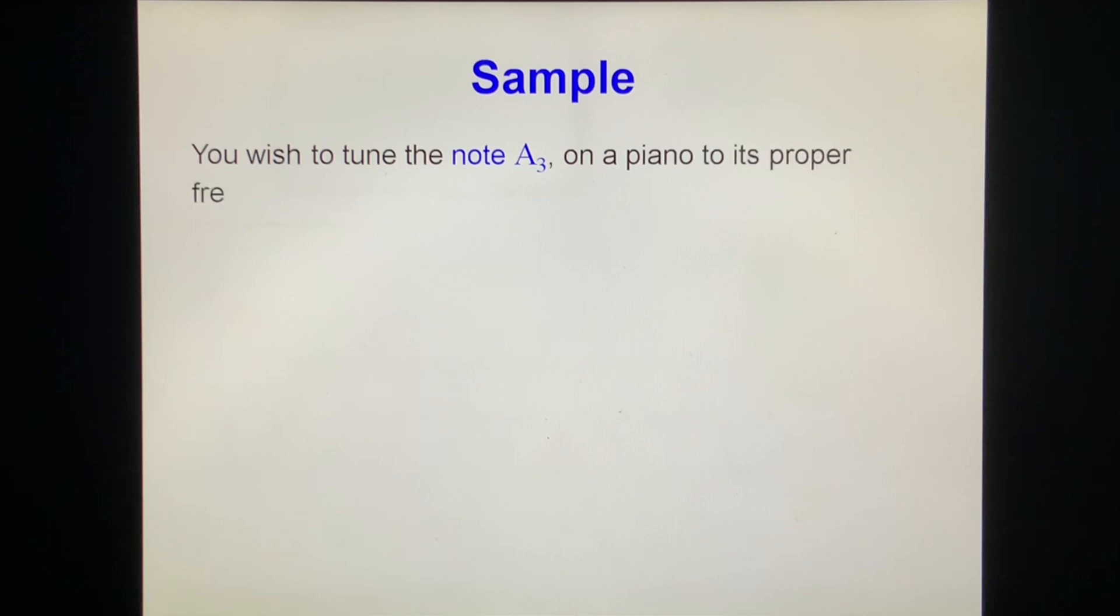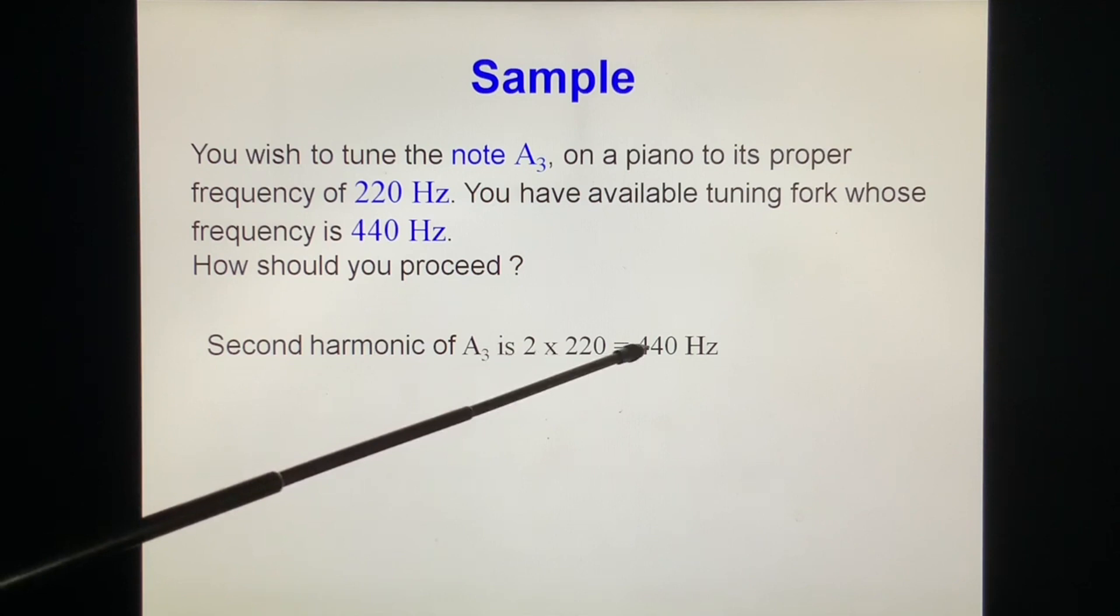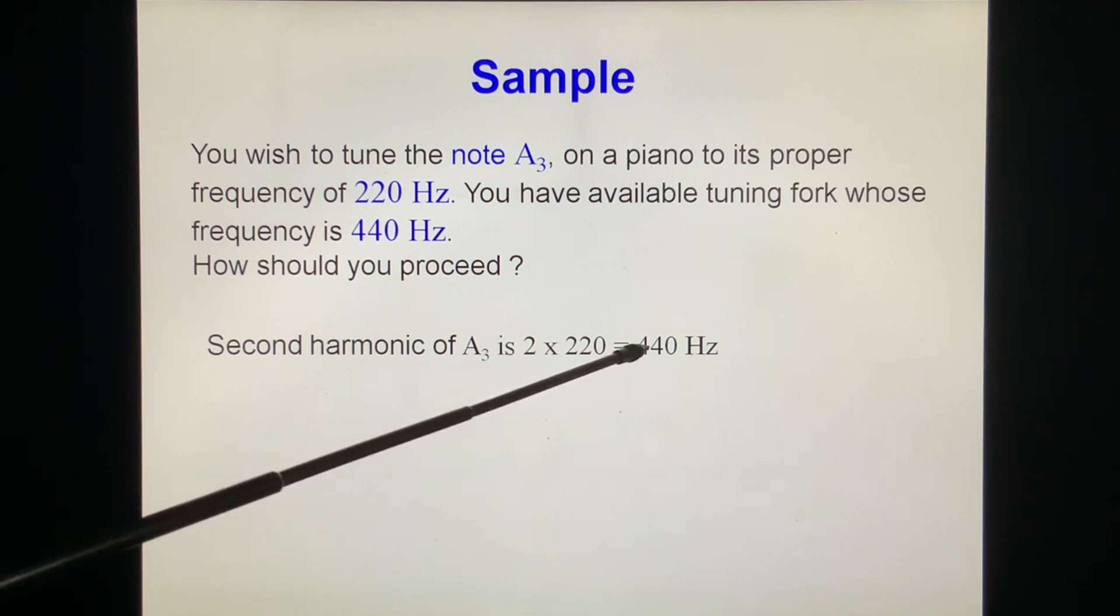Example. You wish to tune the note A3 on a piano to its proper frequency of 220 Hz. You have a valuable tuning fork with frequency 440 Hz. How should you proceed? The second harmonic is 2 times 220 Hz, 440 Hz. So you listen to beats by tuning the piano until the beat's notes disappear. It's 440 Hz. If you don't hear the beats, that means their frequencies are the same.